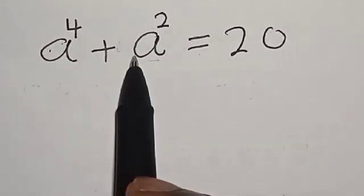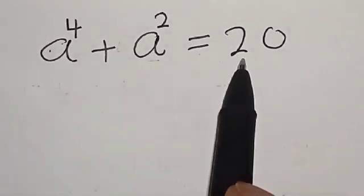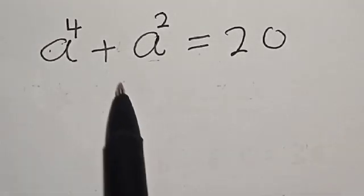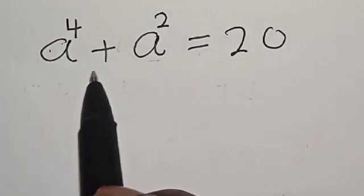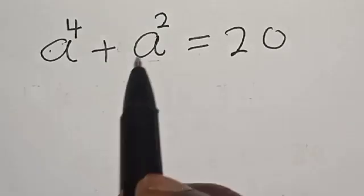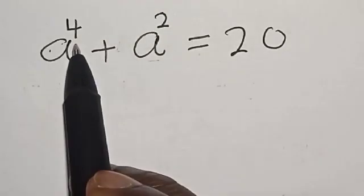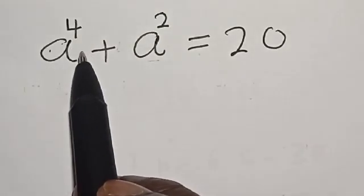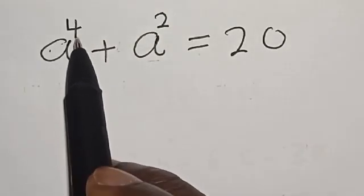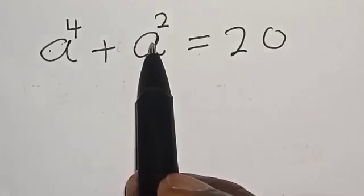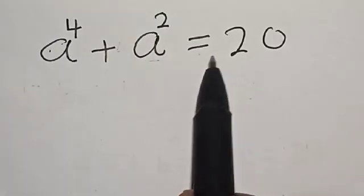A raised to power 4 plus A square is equal to 20. Hi everyone, welcome to my class. In this class, we want to find the value of A from this given equation: A raised to power 4 plus A square is equal to 20.